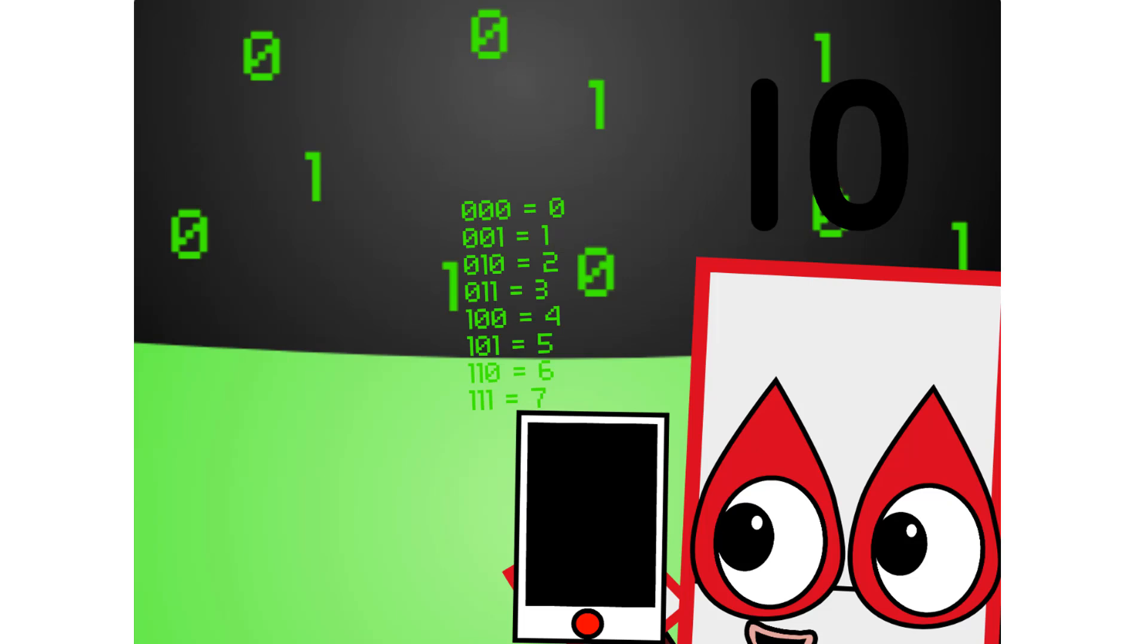There are eight different combinations of three-digit numbers in binary. This means that binary can easily be coded into octal. There are also sixteen different combinations of four-digit numbers in binary. This means that binary can easily be coded into hexadecimal too.